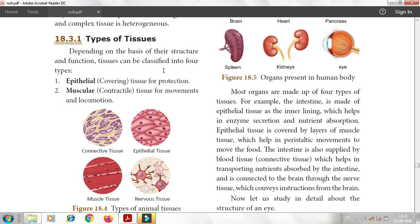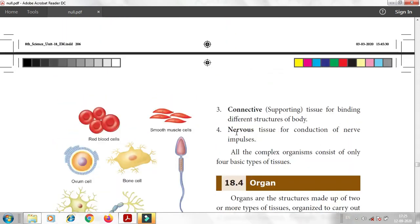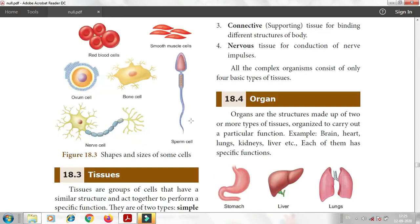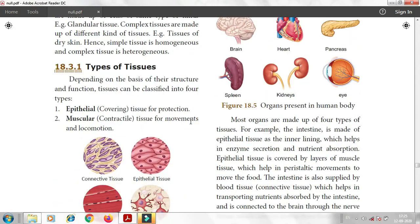The four types are: epithelial tissue, muscular tissue, connective tissue, and nervous tissue.